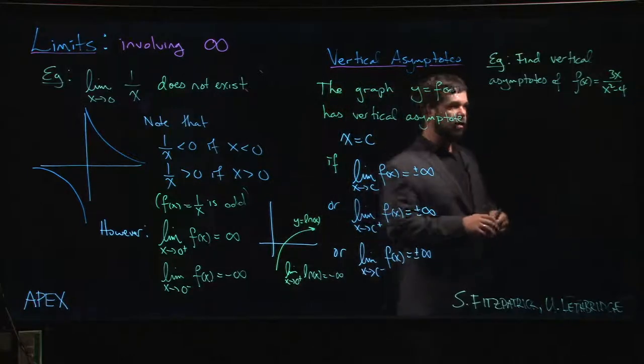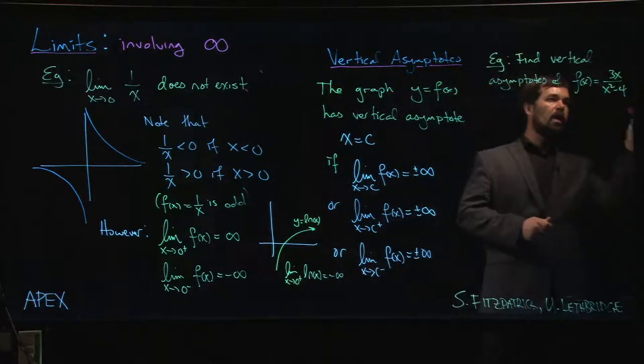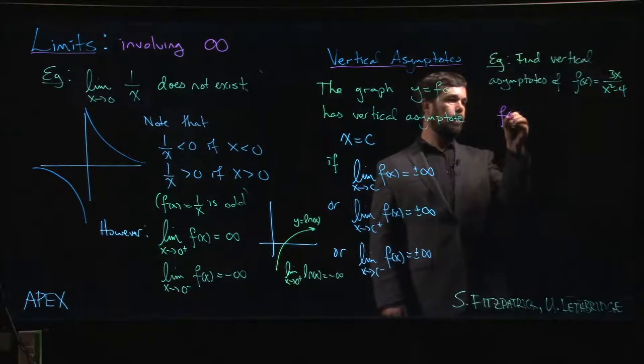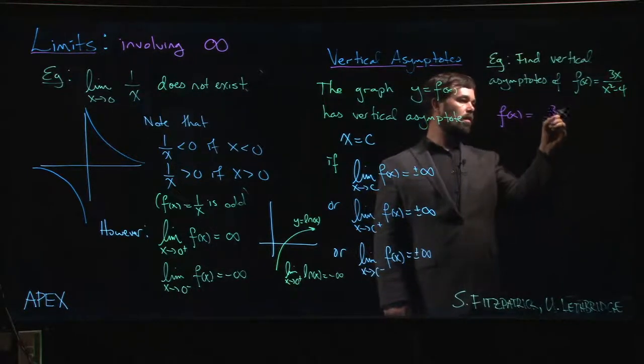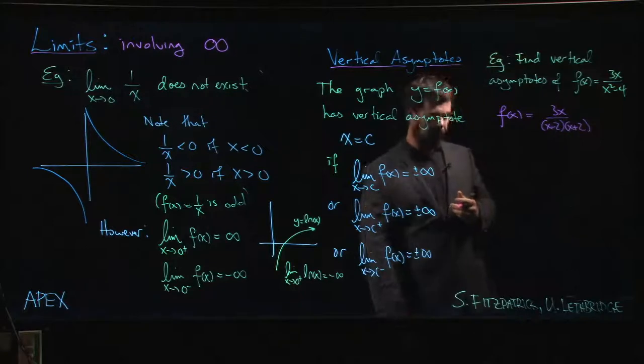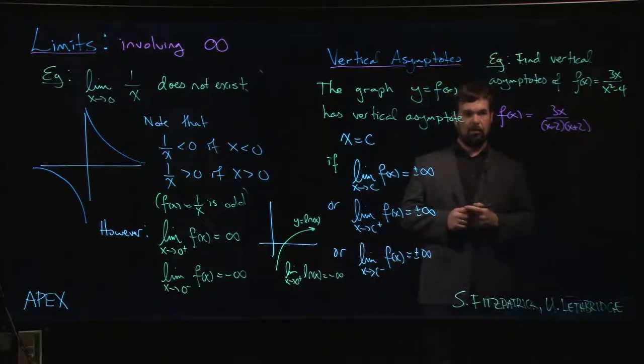So here's a function f of x equals 3x over x squared minus 4. Notice that if we factor that denominator, it's a difference of squares, we get x minus 2 times x plus 2.